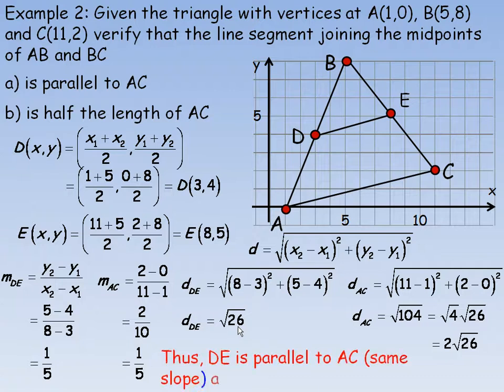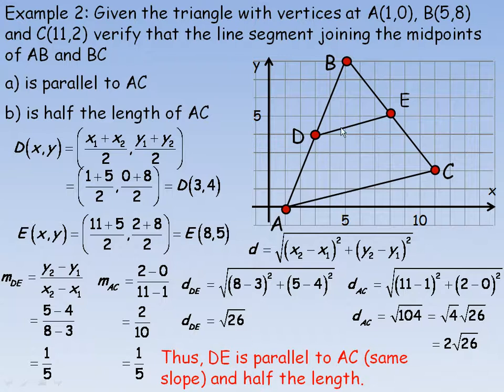So concluding: DE is parallel to AC because they have the same slope, and it is half the length — DE is root 26 and AC is 2 root 26. And that's the end of the lesson.